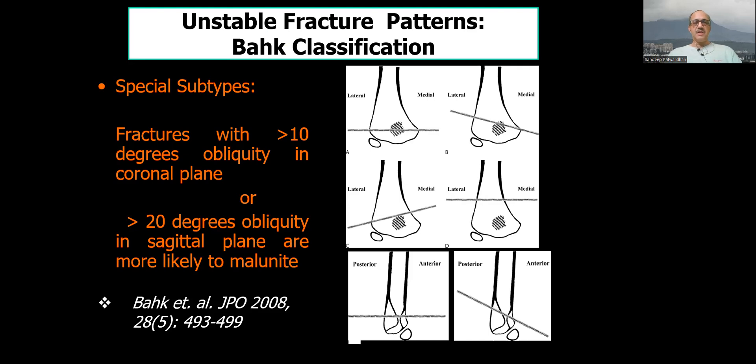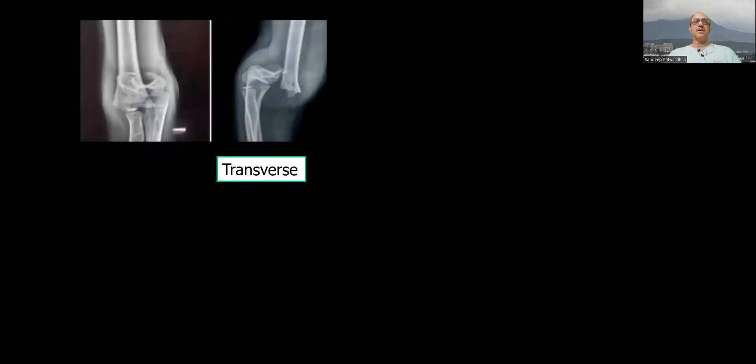Bach has given special subtypes of more than 10 degree obliquity in coronal or 20 degree in sagittal plane and has warned us that these are likely to malunite. So look at medial oblique or lateral oblique fracture lines and on sagittal either an anterior slope or a posterior slope or a simple transverse. So there are various types of fractures is what you should understand.